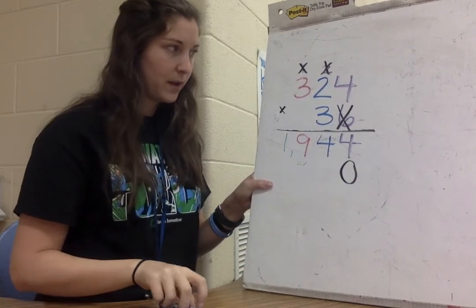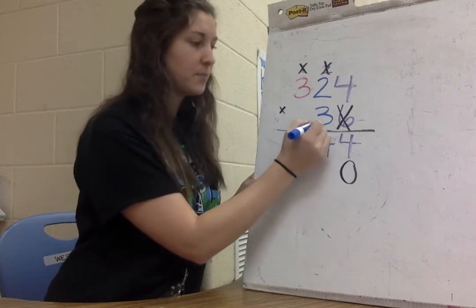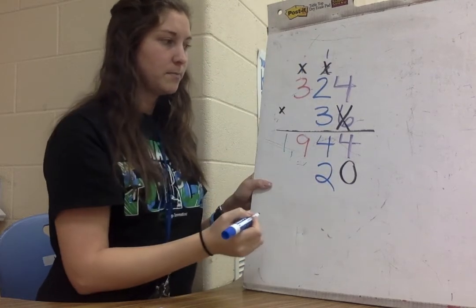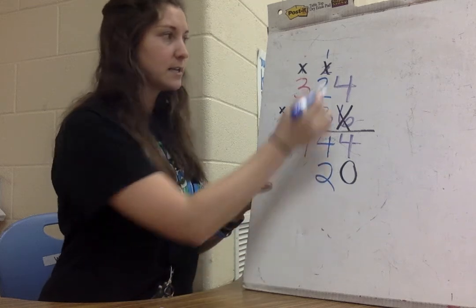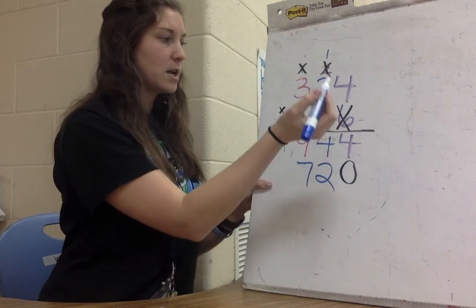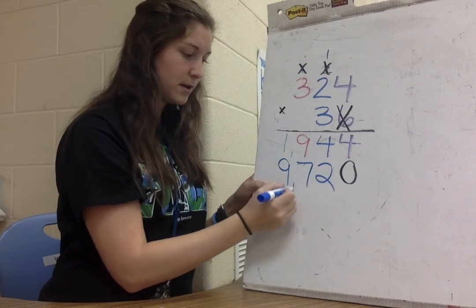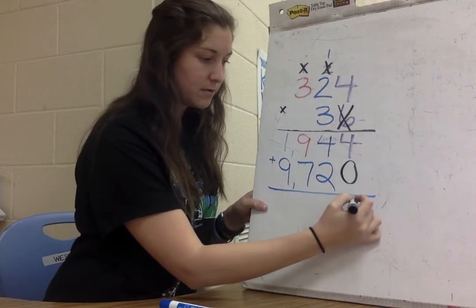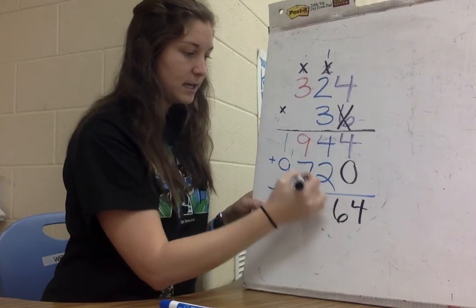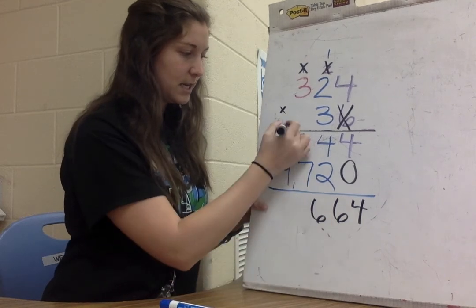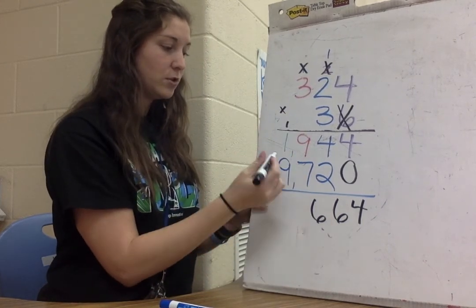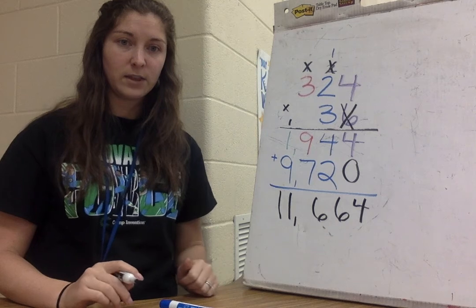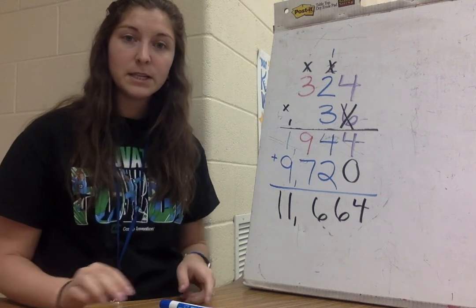Now moving to the tens digit: 3 times 4 is 12 — put 2 down, carry 1. 3 times 2 is 6, plus 1 is 7. 3 times 3 is 9. Now I'll add the two partial products: 4 plus 0 is 4, 4 plus 2 is 6, 9 plus 7 is 16 — carry 1, 1 plus 1 is 2, 2 plus 9 is 11. So I get 11,664.